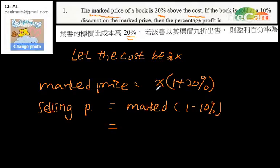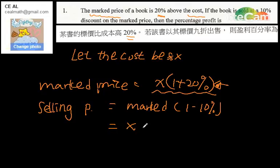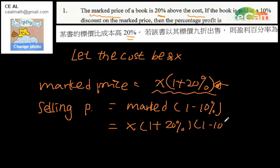Because the marked price is equal to X multiplied by 1 plus 20%, we substitute this in: the selling price equals X multiplied by (1 plus 20%) multiplied by (1 minus 10%).